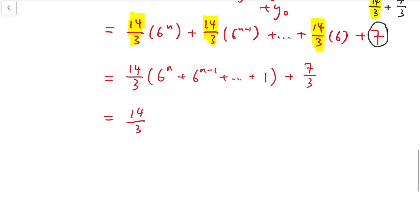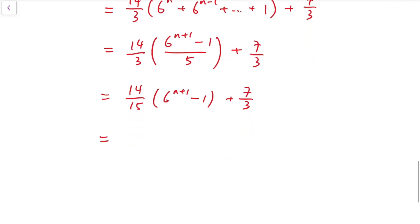So with a similar trick, I can write this as 6 to the power n plus 1 minus 1 over 5. And this product times 14 over 3. So we have 14 over 15 times 6 to the power n plus 1 minus 1 plus 7 over 3. And we have 28 over 5 times 6 to the power n minus 14 over 15 plus 7 over 3. Simplifying: 28 times 6 to the power n plus 7, all divided by 5.